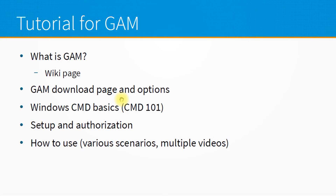Being an open source tool means that it is available for download on the internet and you can get versions for Windows and Linux operating systems. You do not need to know Python or anything like that to use it — you will get the binaries and use them directly from the command line. So let's take a look at the home page for GAM and the wiki page, and then I'll show you the download page and the options you'll need to choose between.